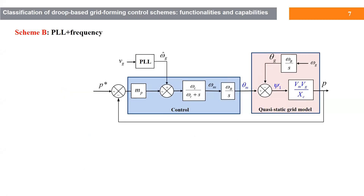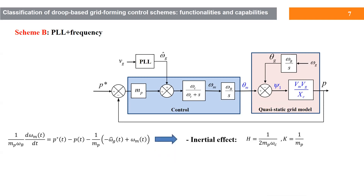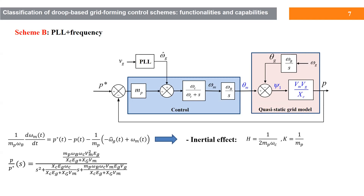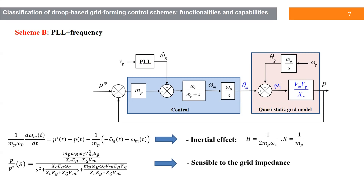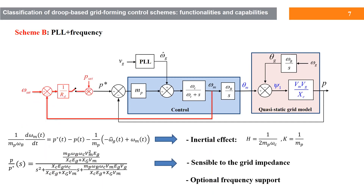The next scheme is scheme B where the PLL gives an estimation of the grid frequency to the control. In this case, even if the PLL dynamics are fast, we are not capable of removing the two inputs, contrary to scheme A. An interesting feature of this control is that by writing the dynamic equation of the control and comparing this equation with the well-known swing equation, we notice that this control provides inertial effect with an equivalent inertia constant and damping factor. Again, if we obtain the transfer function of P over P star for this control, we can see the effect of grid impedance, so we claim that this control is sensitive to grid impedance variation. The droop control is optional like in scheme A.